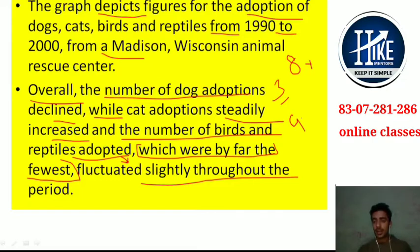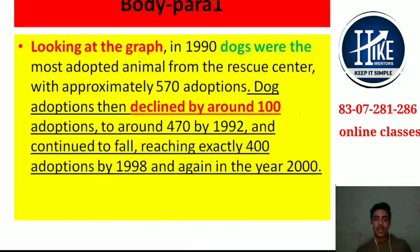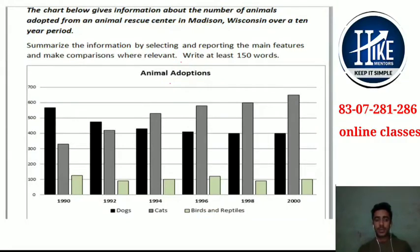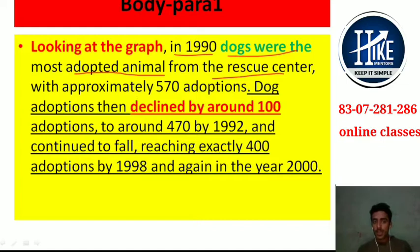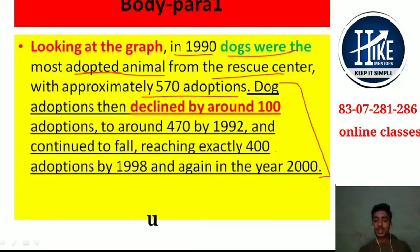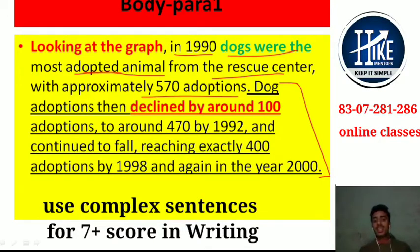The grammar and sentence structure — having varied sentence structures — will be a plus point. First of all for dogs, you can see in the introduction: looking at the graph, in 1990 or in the initial year, dogs were the most adopted animal — the highest number from the rescue center — with approximately 570 adoptions. After that, the real task starts. In the sentences which are underlined, no full stop is used; instead, complex and compound sentences are used, and that will help you to score. If you want to score 6 plus, you must use complex sentences.